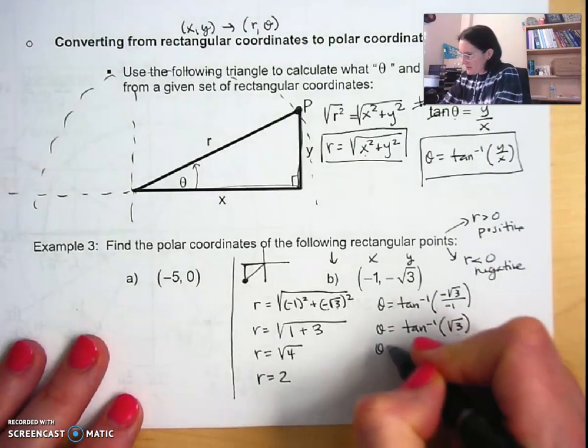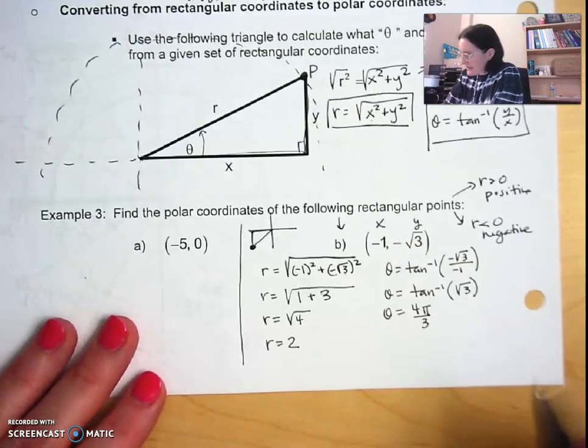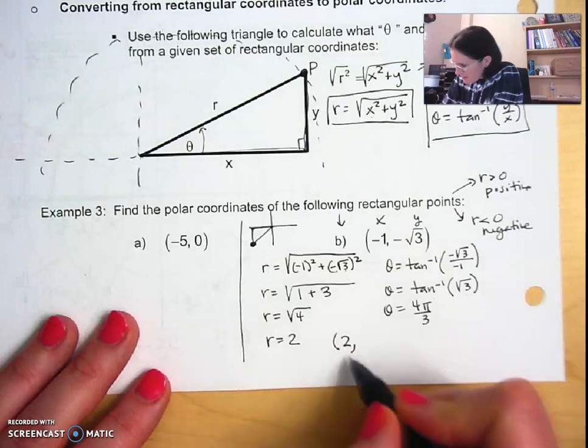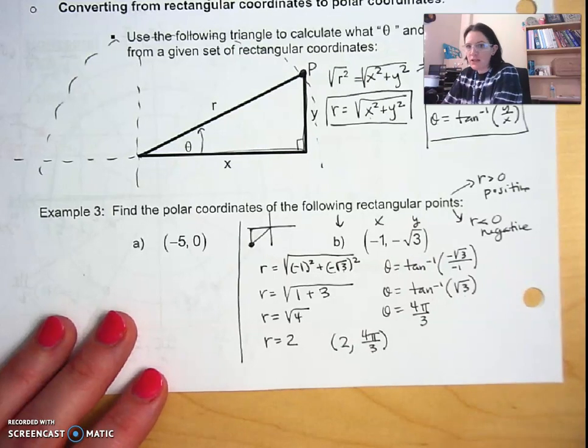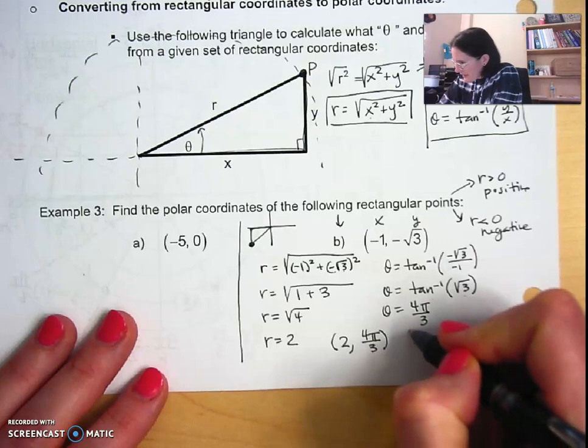So theta is equal to four pi over three. So my first point where r is positive or greater than zero is r is two, theta four pi over three. Now the negative version of that, when r is negative two.